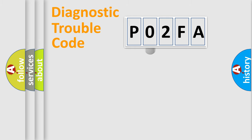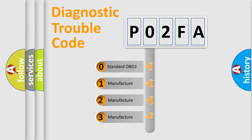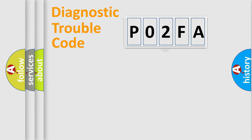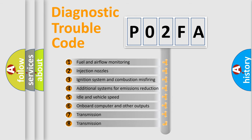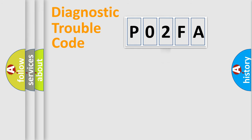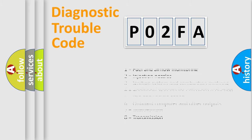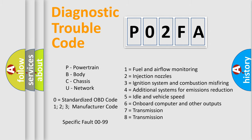This distribution is defined in the first character of the code. If the second character is expressed as zero, it is a standardized error. In the case of numbers one, two, or three, it is a more specific expression of a car-specific error. The third character specifies a subset of errors, and this distribution is valid only for the standardized DTC code. Only the last two characters define the specific fault of the group. Note that such a division is valid only if the second character code is expressed by the number zero.